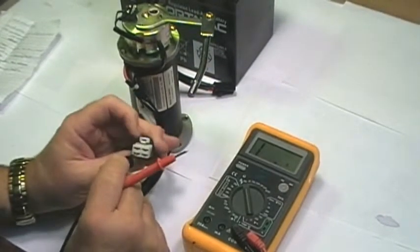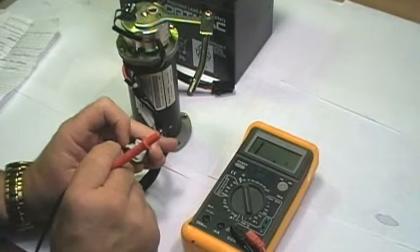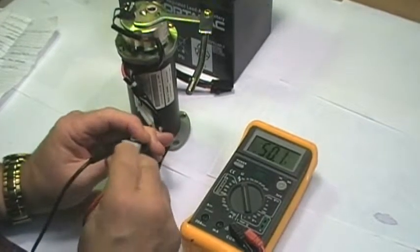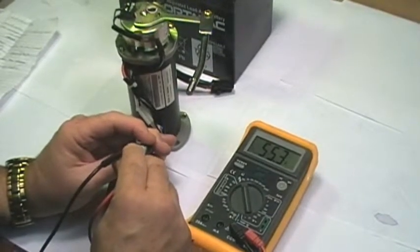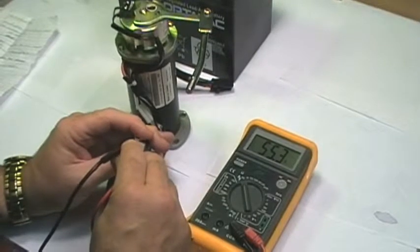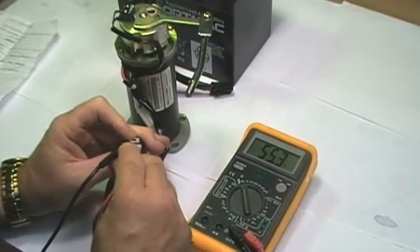From there we'll go to the other two terminals and we'll measure 55.3 ohms, which tells us that the electromagnetic brake is fine.